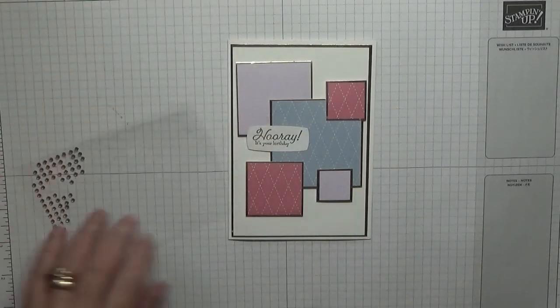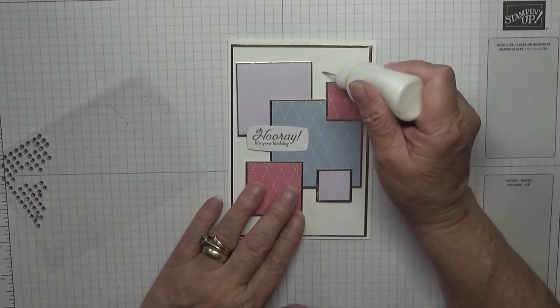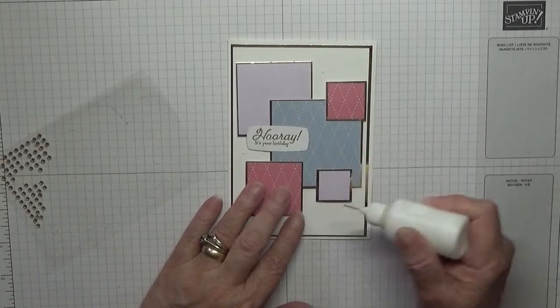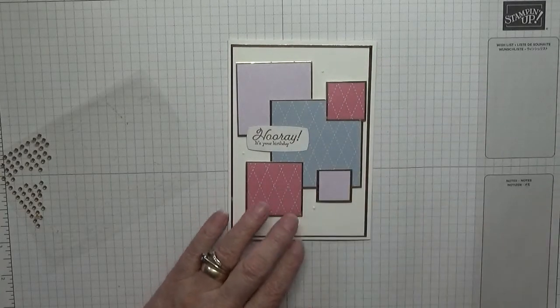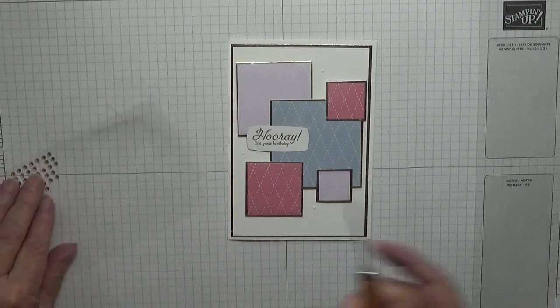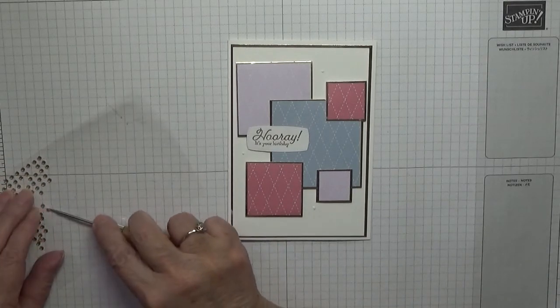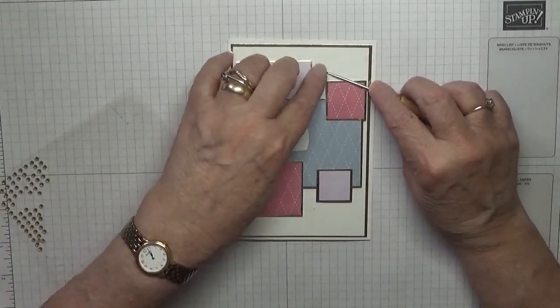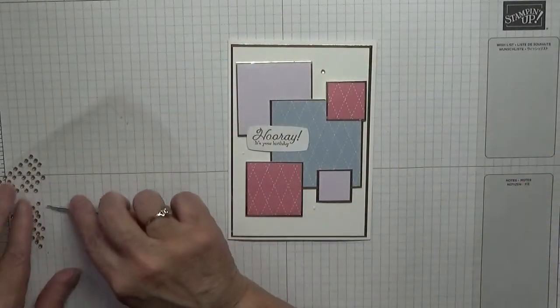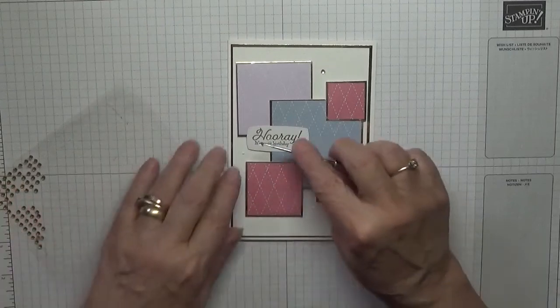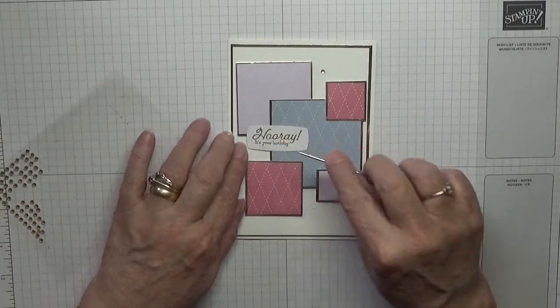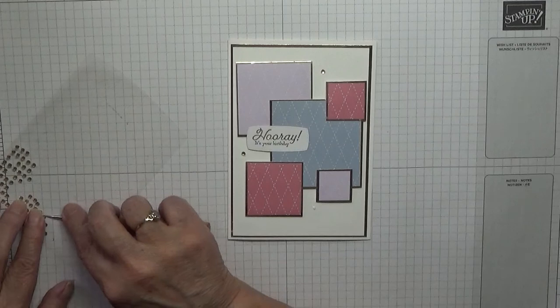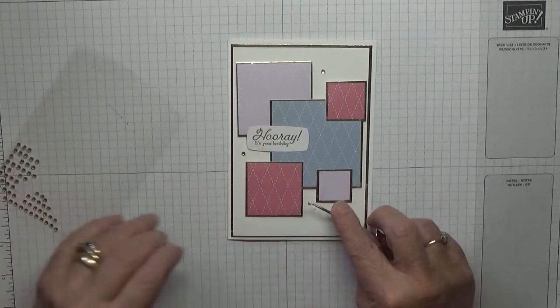Just going to add some dimensionals. We're going to put one up here, one there, one there, and one there. I meant gems. I've got these little gold gems.